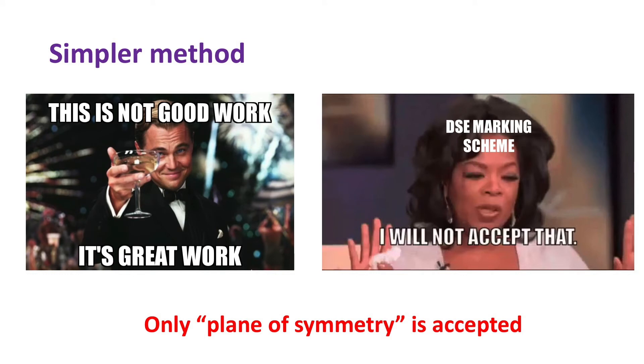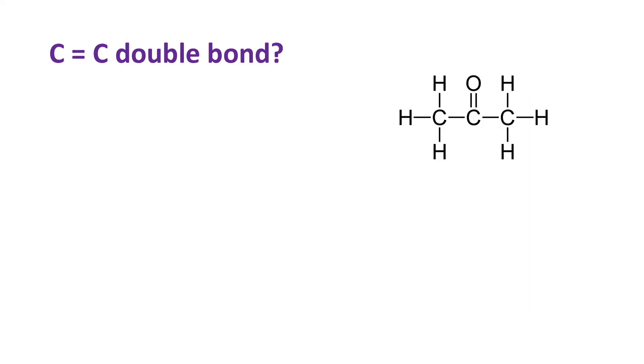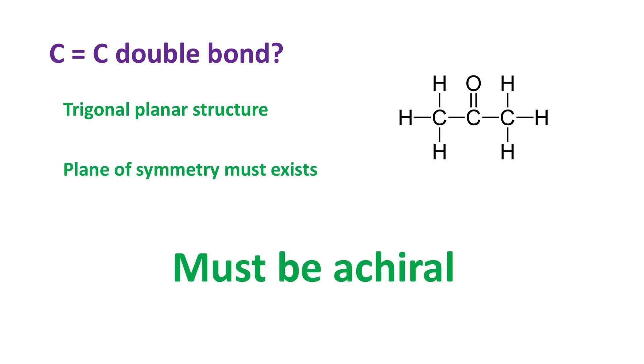Only the idea of plane of symmetry is accepted. With this idea, we can show all carbon atoms with double bonds are achiral because the plane of symmetry always exists as they all have trigonal planar structure.